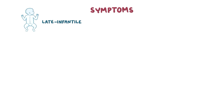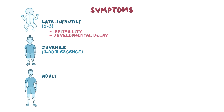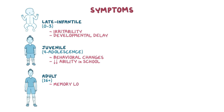There are three forms of MLD based on the age at onset of symptoms: late infantile form, juvenile form, and adult form. In the late infantile form, symptoms develop within the first three years of life and include irritability and developmental delay. In the juvenile form, symptoms usually develop between the age of four years and adolescence, around 12 to 14 years of age, and include behavioral changes and decreased ability in school. In the adult form, symptoms usually develop after the age of 16 and include memory loss and psychosis.